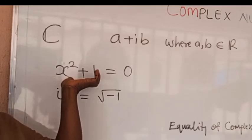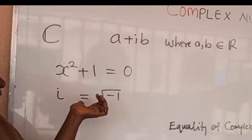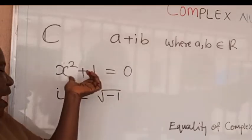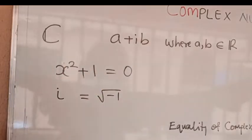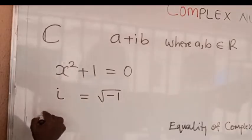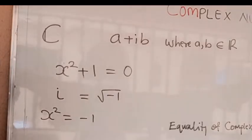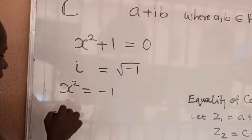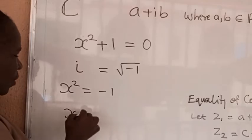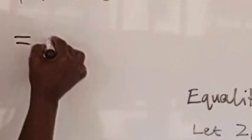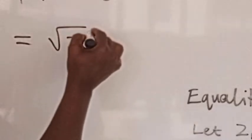So with this, we have that x squared is equal to minus one, therefore x is equal to the square root of minus one, which is the complex number known as i.